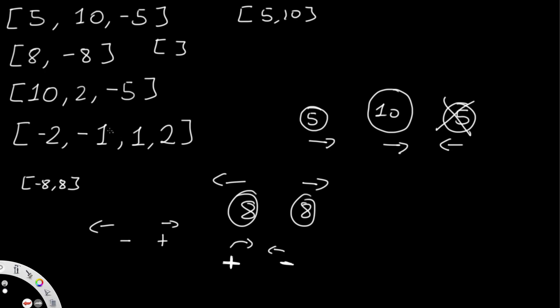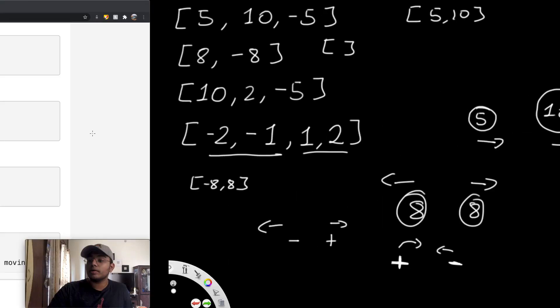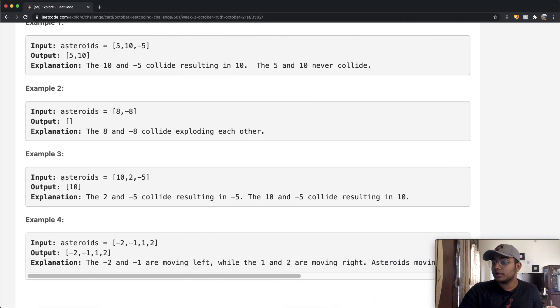To go over that one more time: here we have both negative values on the left and positive values on the right. They both keep going in their own directions and are never going to intersect. So the answer is exactly the same as it is: negative 1, negative 2, negative 1, comma 1, comma 2 — and that is exactly what our answer is.